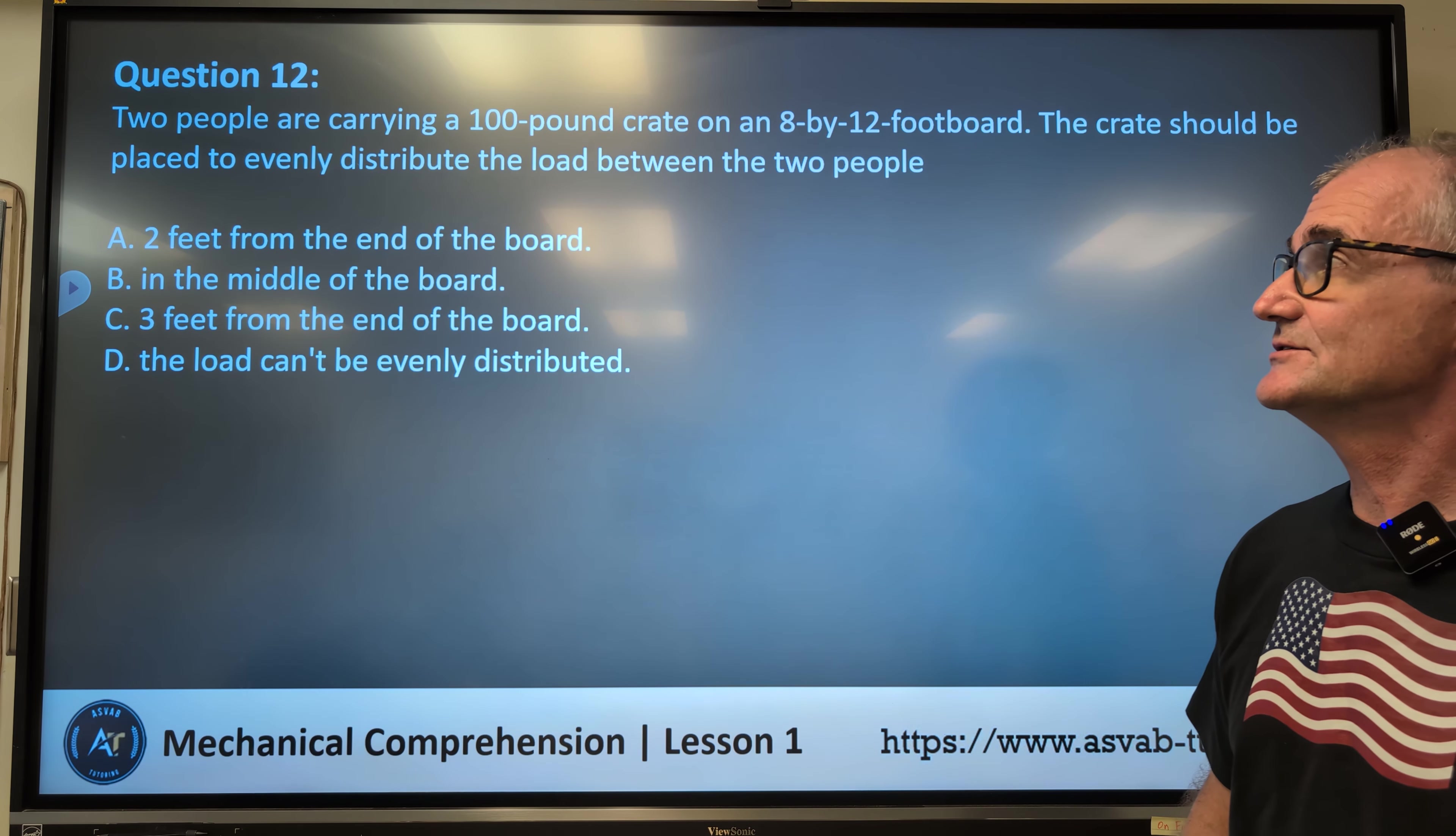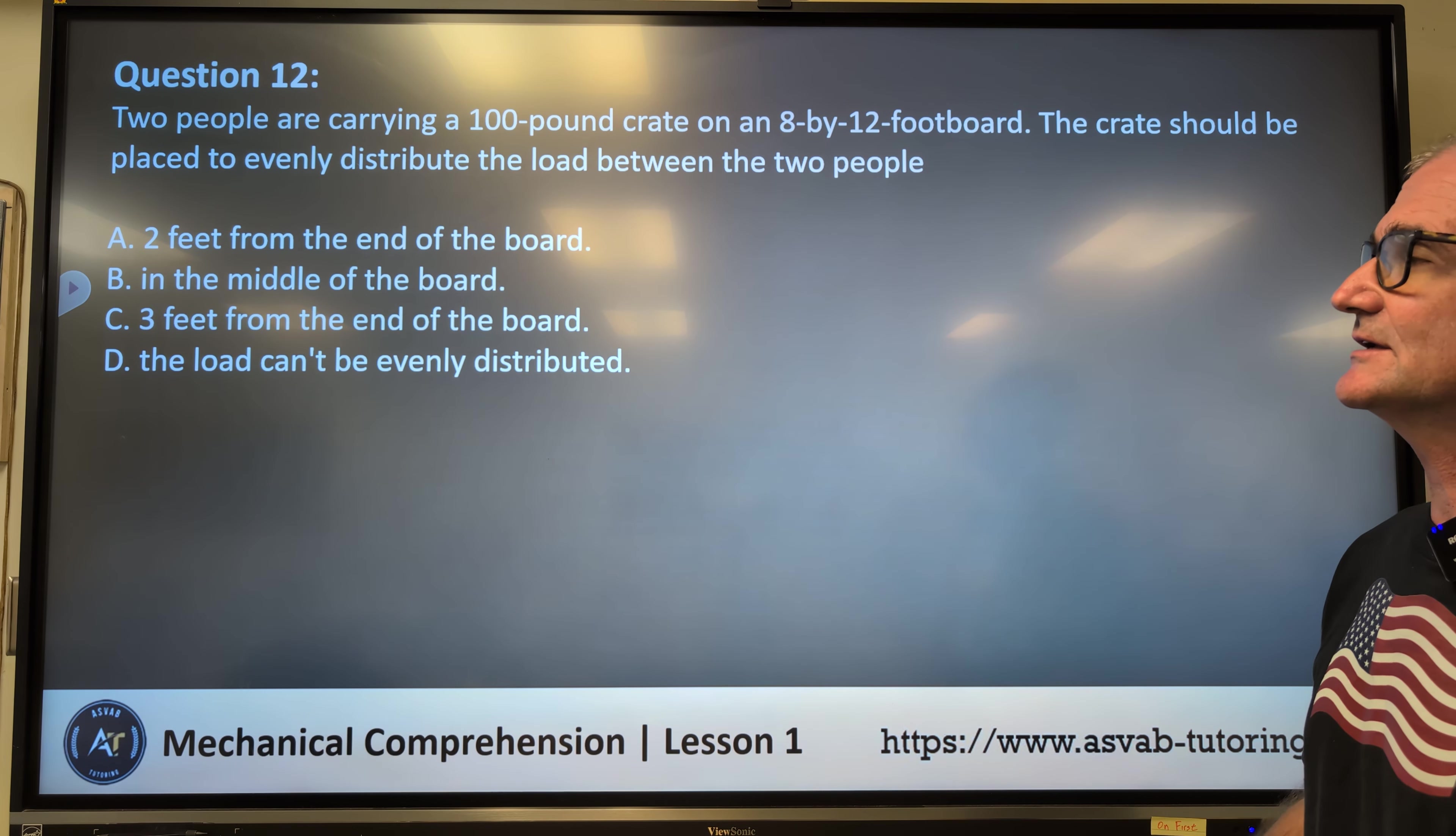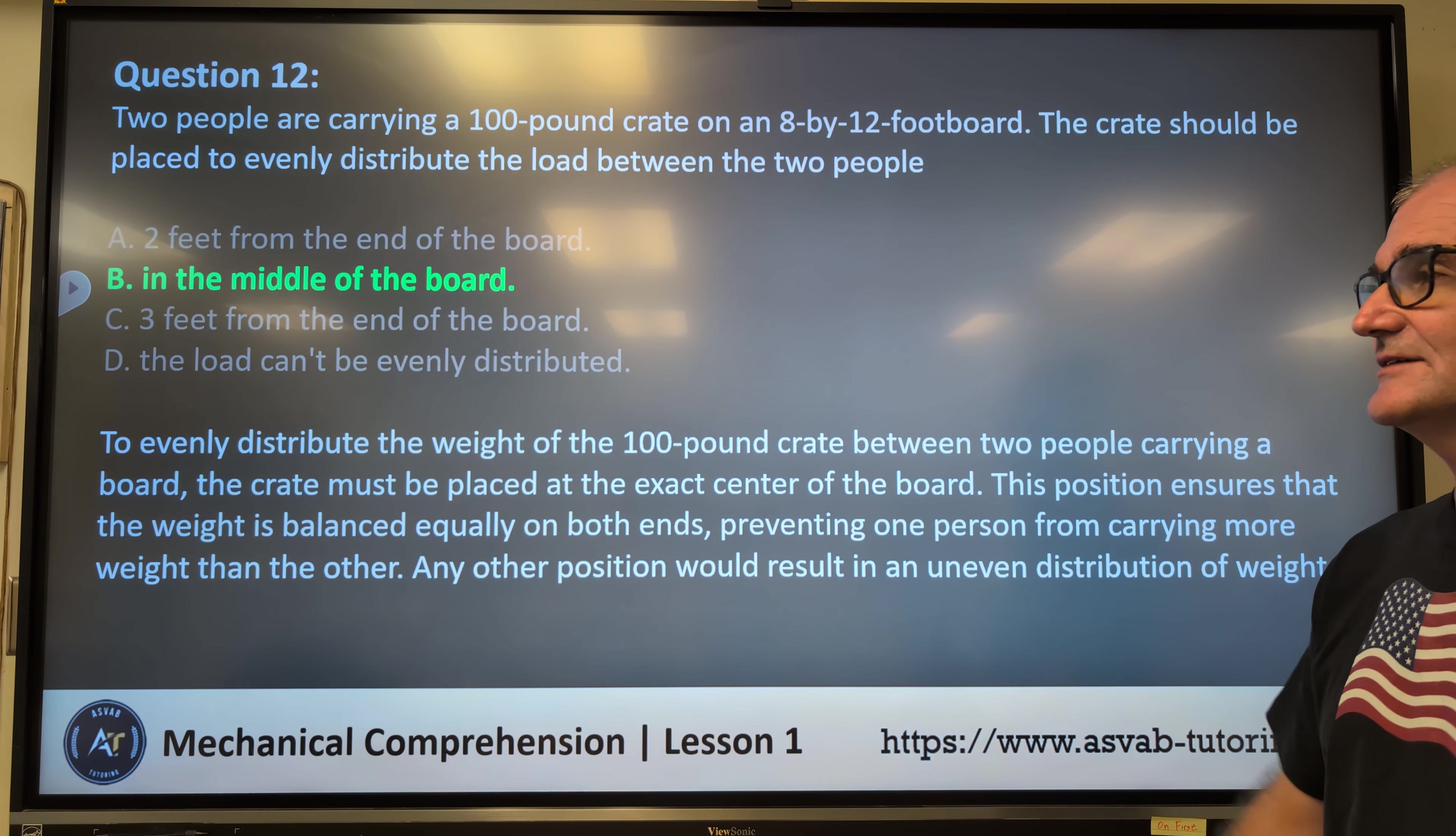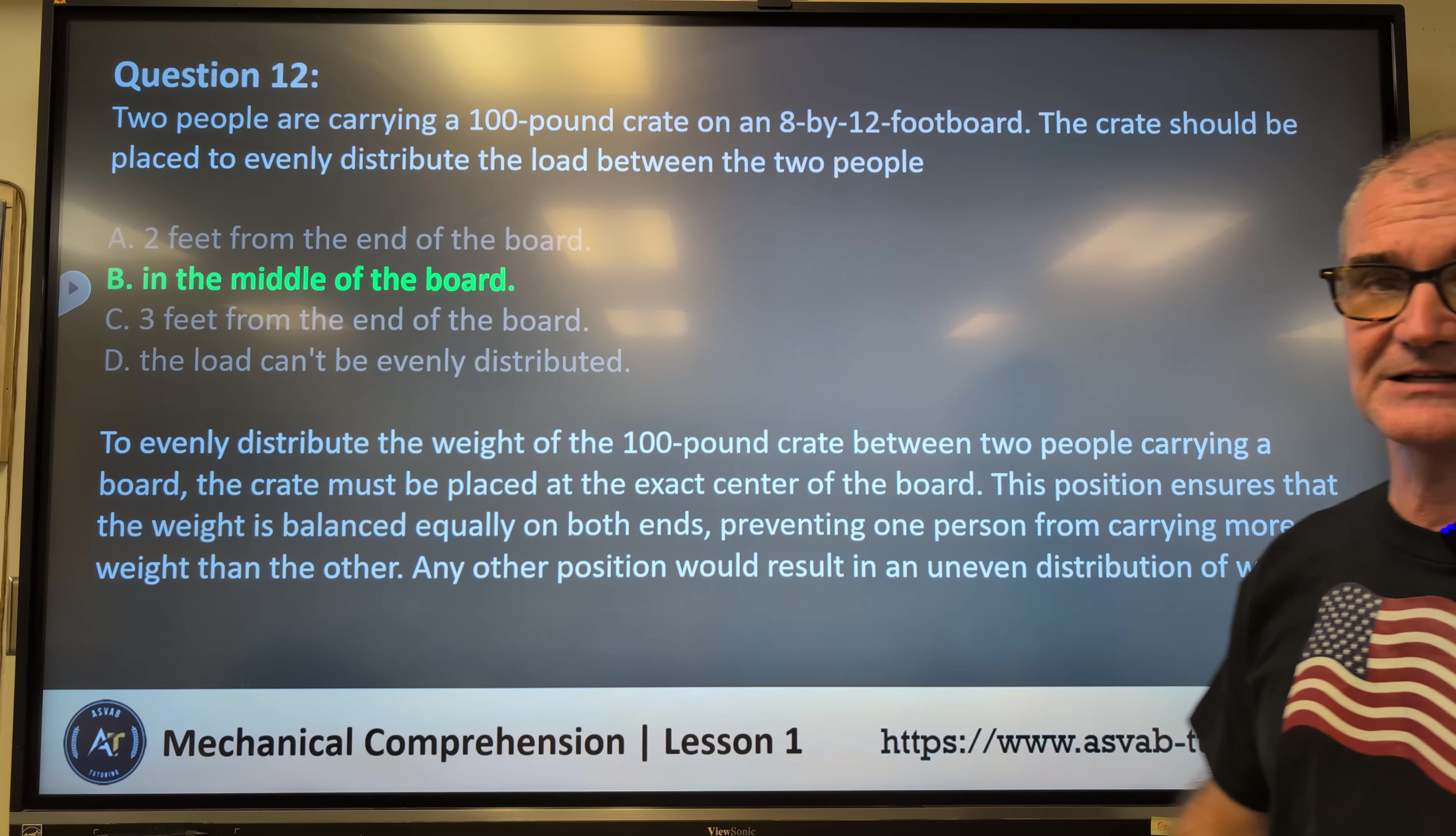Number 12. Two people are carrying a 100 pound crate on an 8 by 12 foot board. The crate should be placed to evenly distribute the load between the two people: A, two feet from the end of the board, B, in the middle of the board, C, three feet from the end of the board, or D, the load cannot be evenly distributed. All right, correct answer B. The load should be in the middle of the board to evenly distribute the weight of the 100 pound crate. I mean, the weight of it is actually not important, or the number of people carrying it. But on each side, it needs to be in the center to evenly distribute the weight.